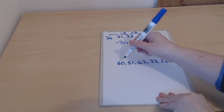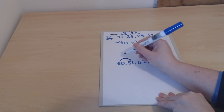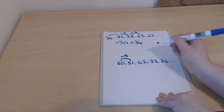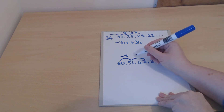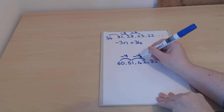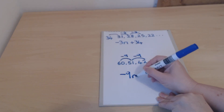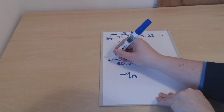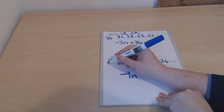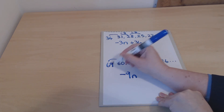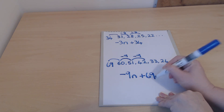Here's another decreasing sequence. To go from one term to the next it's minus 9. Checking: 51 minus 9 gives us 42. So we've got minus 9n, and then going back one step we need to add on 9, which gives us 69. So the rule is minus 9n plus 69.